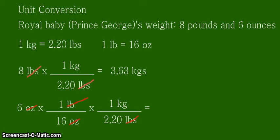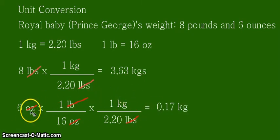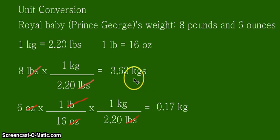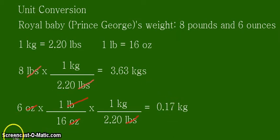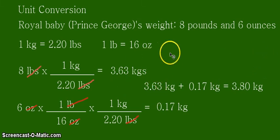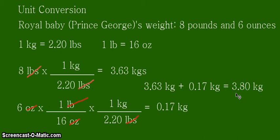The answer for this part is 0.17 kilograms — that is 6 ounces divided by 16, then further divided by 2.20, giving 0.17 kilograms. We now have 3.63 kg from the first part and 0.17 kg from the second part. All we need to do is sum them up to get the final answer, which is 3.80 kilograms — 3.63 plus 0.17 equals 3.80 kilograms.